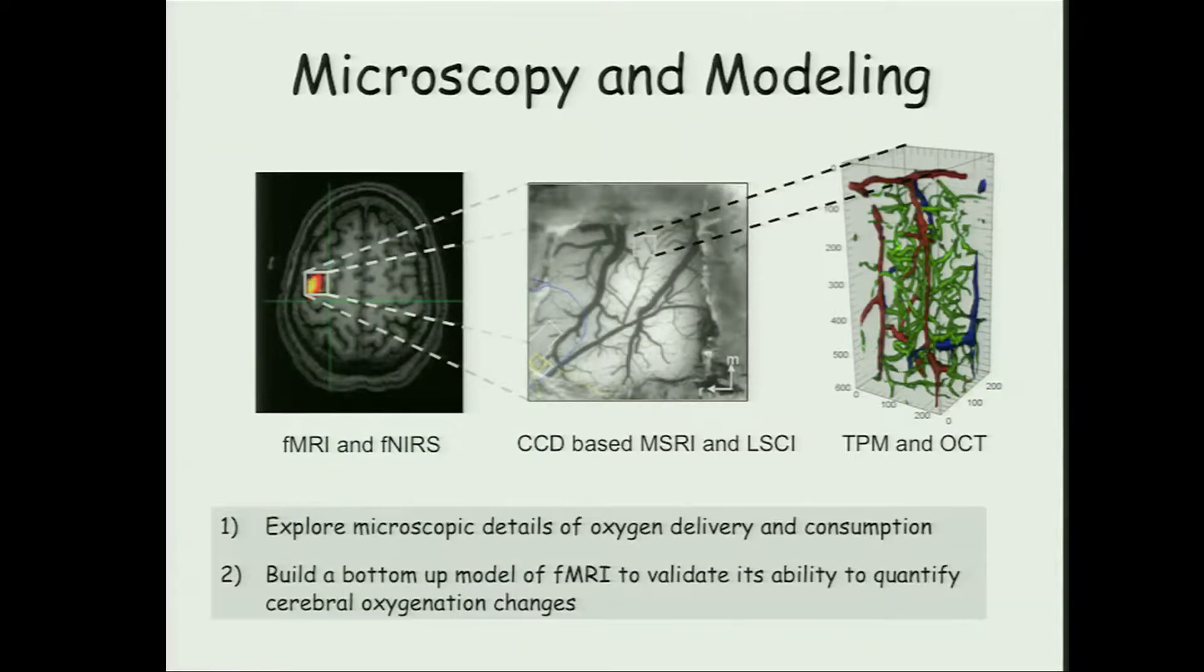During my talk, there are two main points I want you to get. One, that there are exciting advances in microscopy giving us new detailed insight into how oxygen is being delivered to tissue at the microscopic level. And the other is how we can take those measurements to build a bottom-up model of how fMRI is measuring oxygenation within the brain and how we can validate those fMRI measurements of cerebral oxygenation.